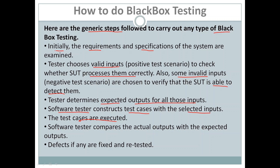When the test cases are executed, the output which is generated is called the actual output. The software tester then compares this actual output with the expected output, which the tester has already determined in a previous step.